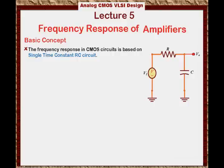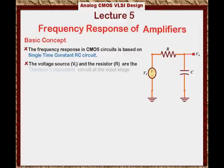One of the things we will notice is that the voltage source VI and the resistor R are basically the Thevenin equivalent circuit at the input stage. The input stage can be a previous amplifier or module, or it can be the input signal coming in from the antenna in the case of a wireless circuit. By any means, we can use Thevenin theorem to simplify that input stage into a voltage source and an input resistance.